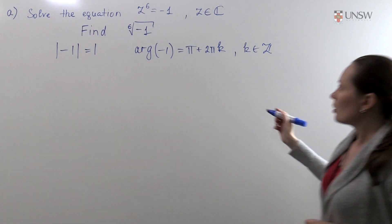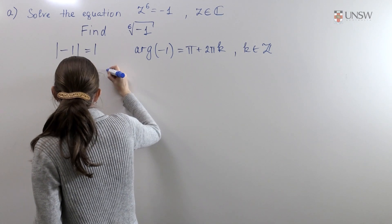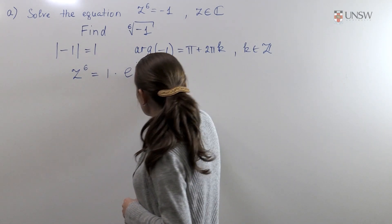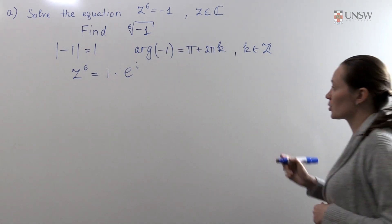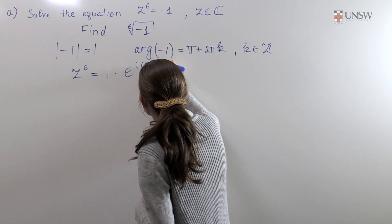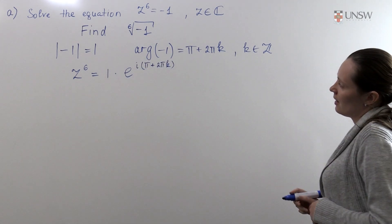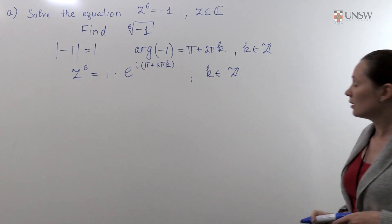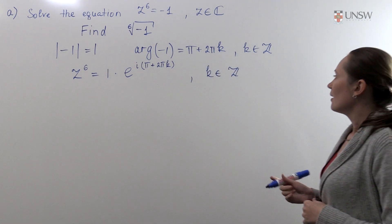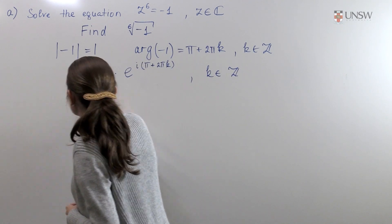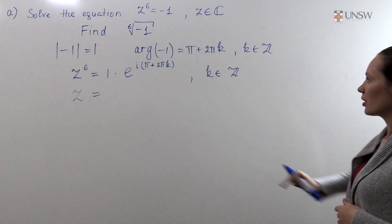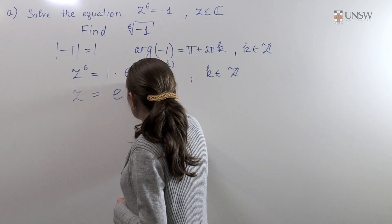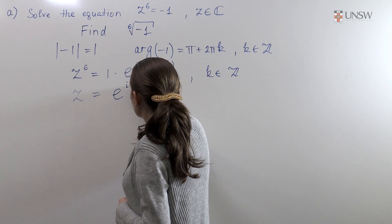So z to the power 6 will be 1 times e to the power i times the argument of minus 1, which is π plus 2πk, where k is any integer. Next we need to find that taking the 1 over 6 power of this number we will obtain e to the power i(π plus 2πk) divided by 6.